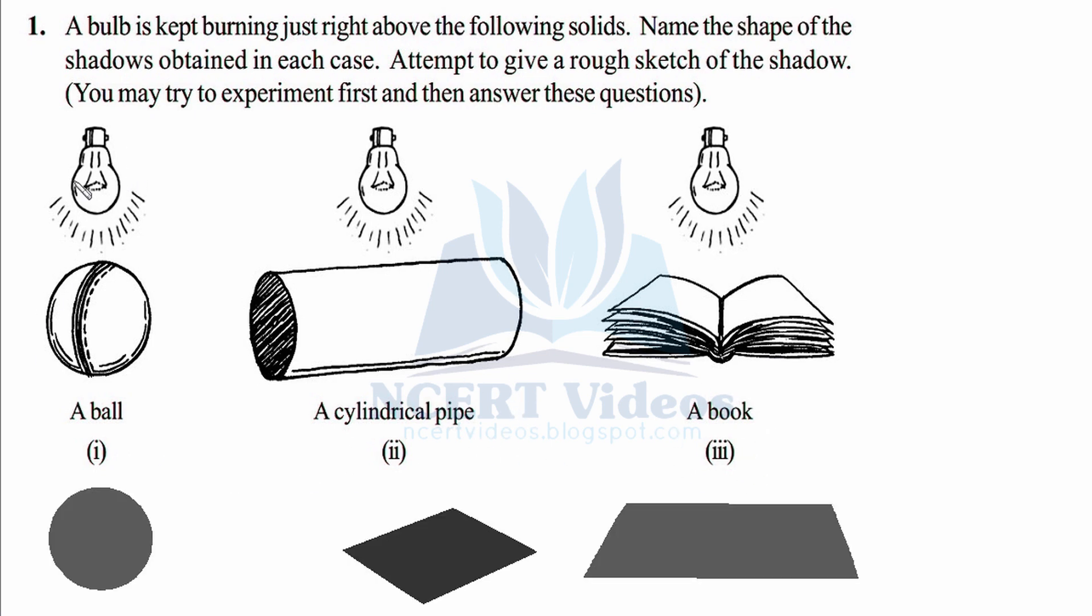In this question, we have our light source, in this case a bulb. When light falls on this object, in this case we have a ball, then light will not be able to reach this area because it will be shadow of your object. When you do this experiment, as the question also asks us to do, the sphere, that is this ball is a sphere, will cast a shadow of a circle. So you may try it, that's first.